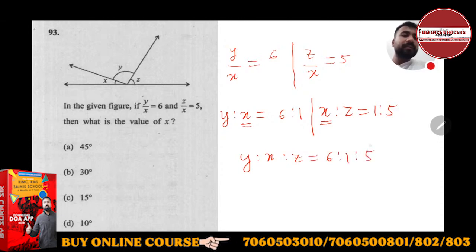This gives us y ki value 6a, x ki value a, and z ki value 5a. These are the three angles x, y, z.